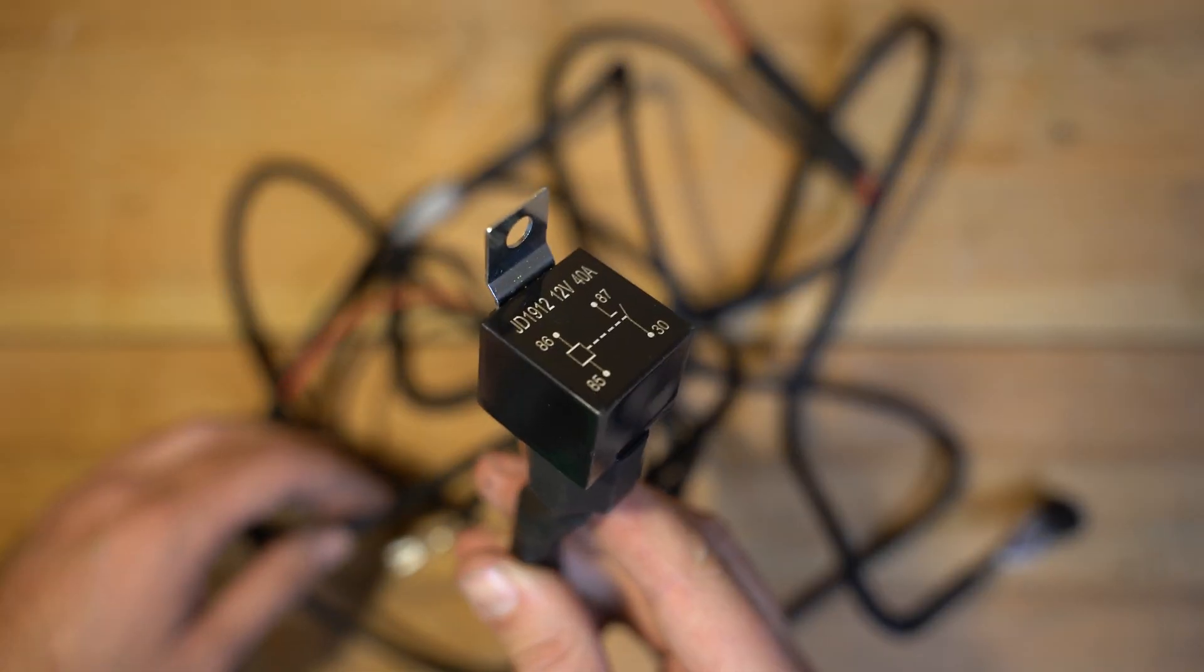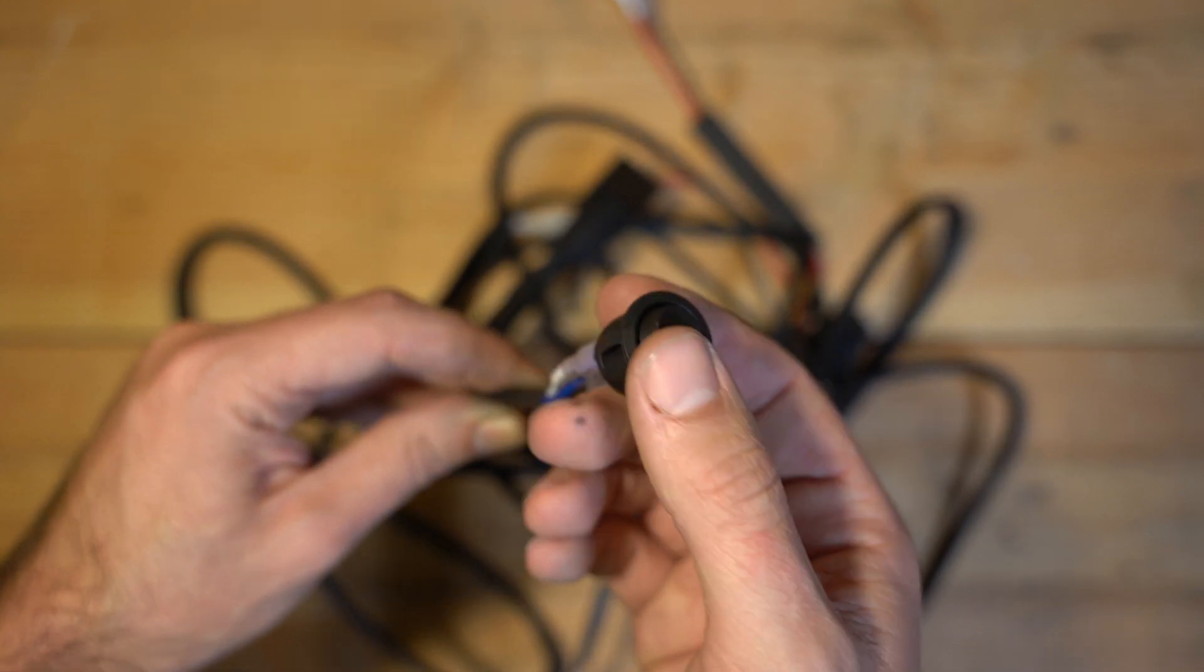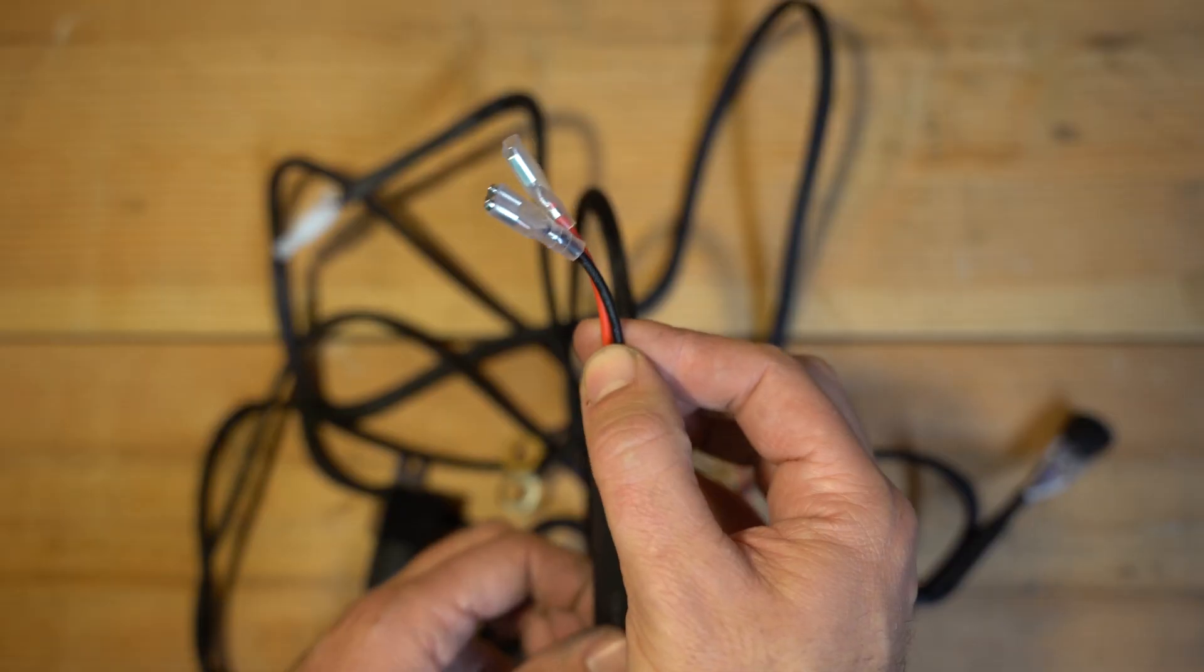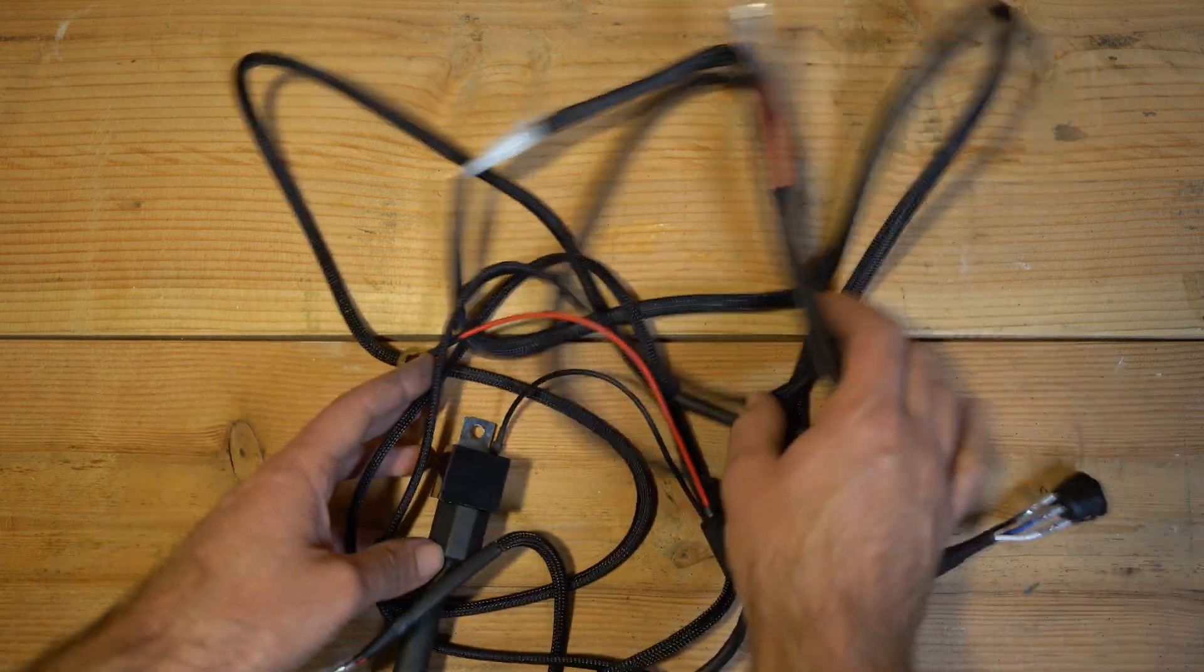It comes with a relay, a little on-off switch, a fused power link, and leads for your lights. So it's basically everything you need, nice little setup.